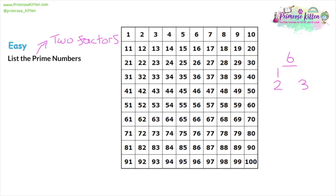The number you're dividing by and the answer are also both factors. Six divided by one was six, and since six divided by six is one, six is also a factor. Now we've got up to the number itself, so we've finished our list. You can see that six has four factors, so six is not a prime number — prime numbers only have two factors.